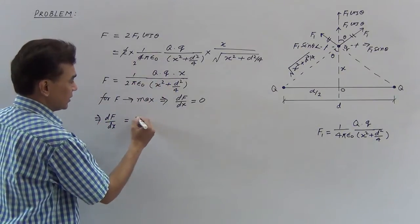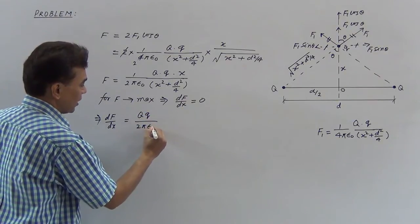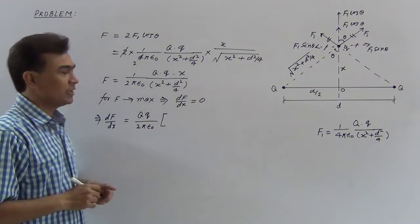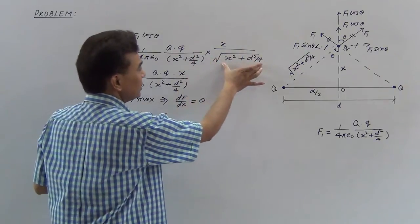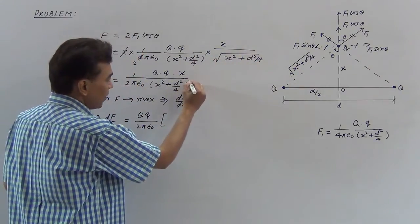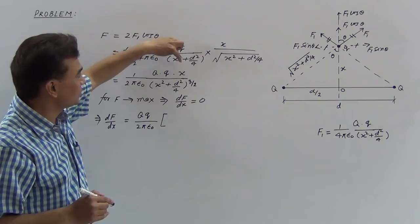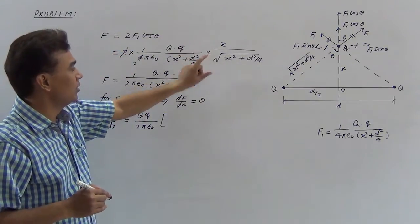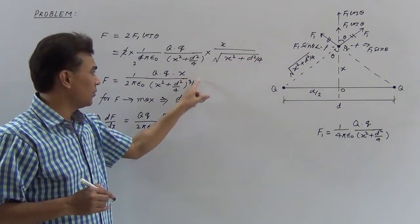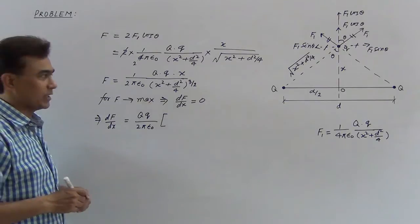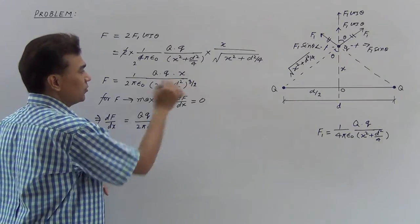Taking the constant Qq/2πε₀ outside, we differentiate x divided by (x² + d²/4)^(3/2). Note that the power on (x² + d²/4) in the denominator is 3/2. The numerator power is 1, and combining with the root gives power 1/2, so total power is 1 + 1/2 = 3/2. Now differentiate using the quotient rule.